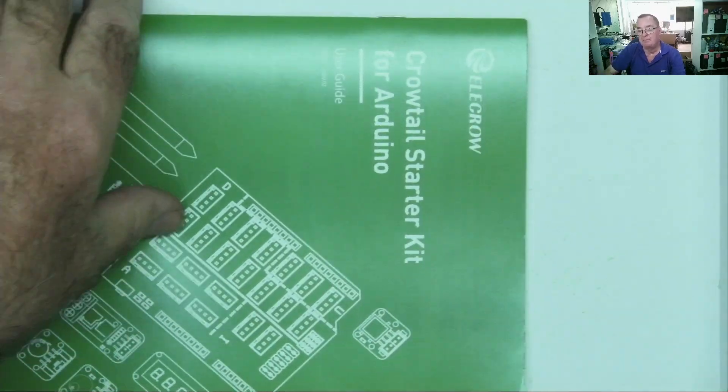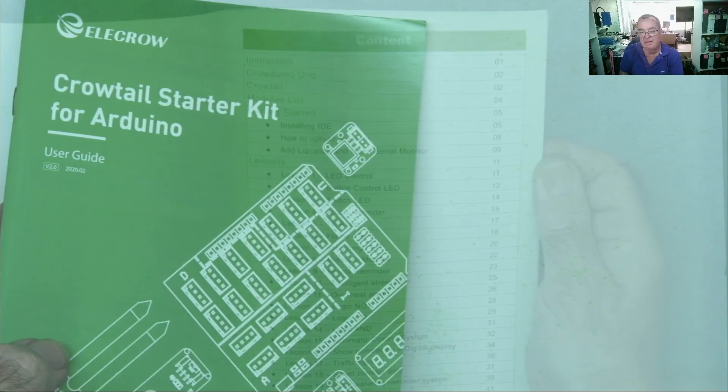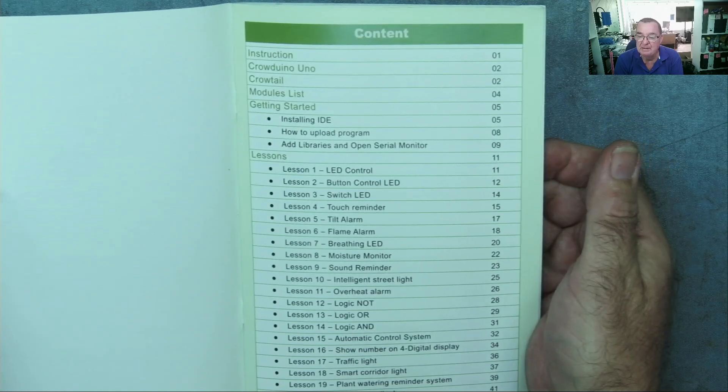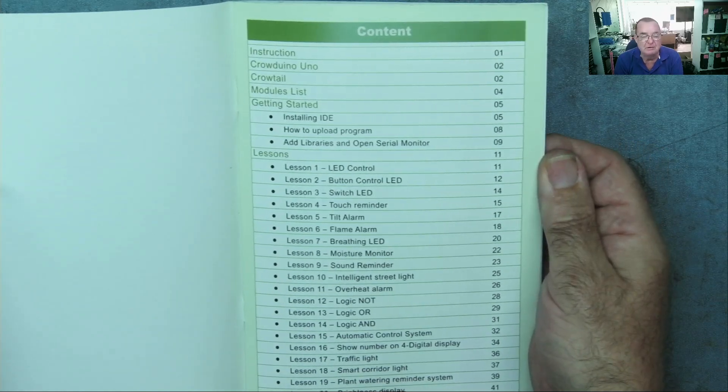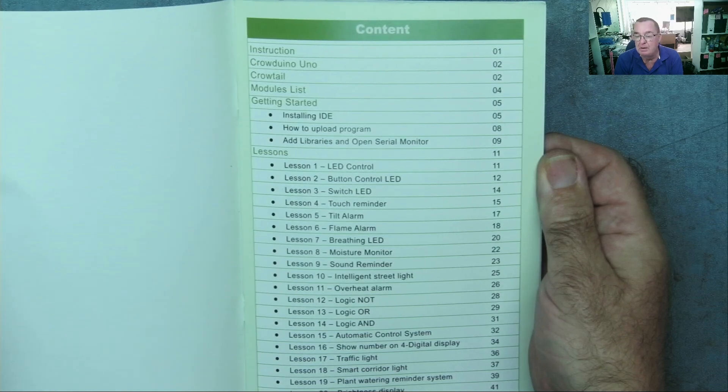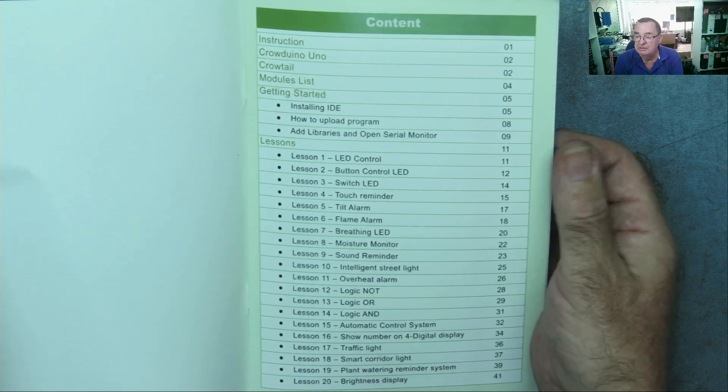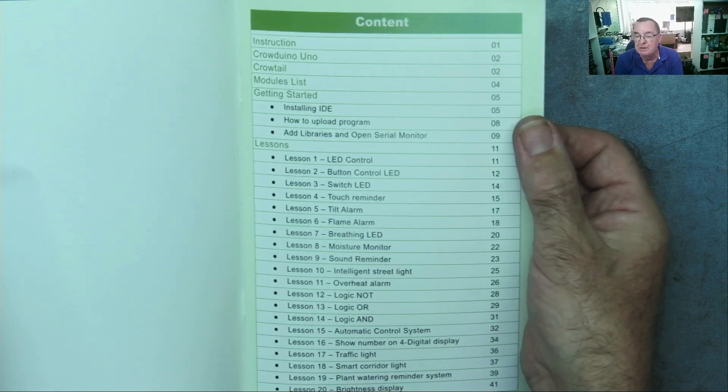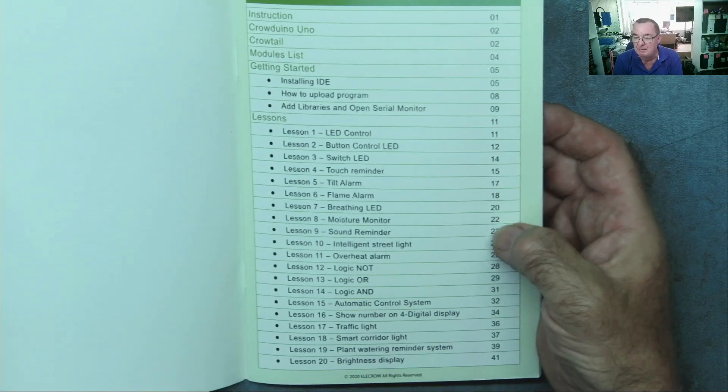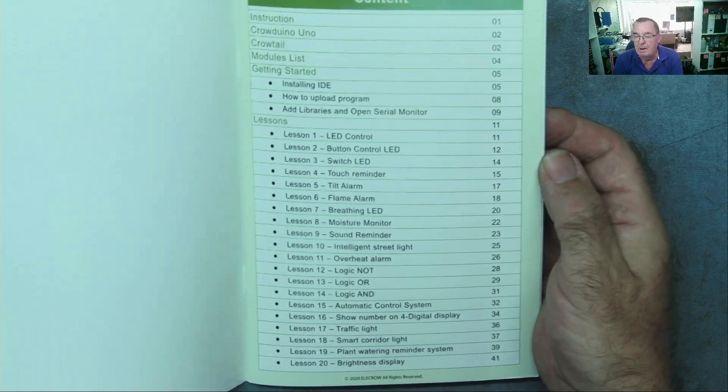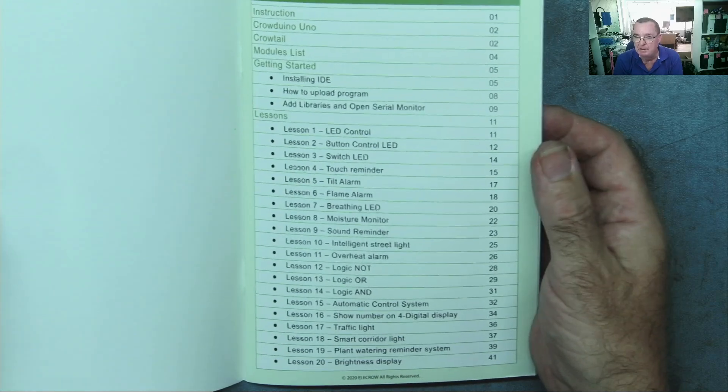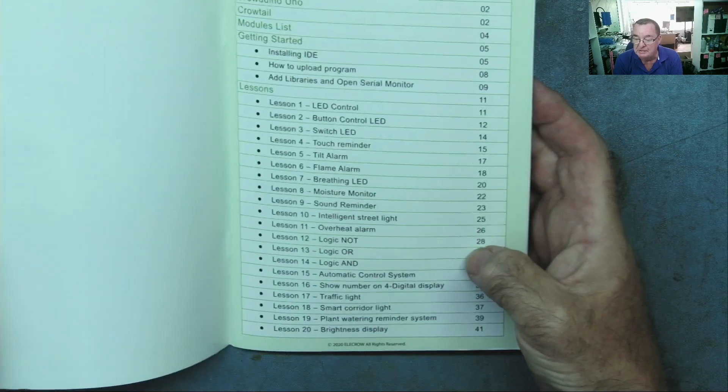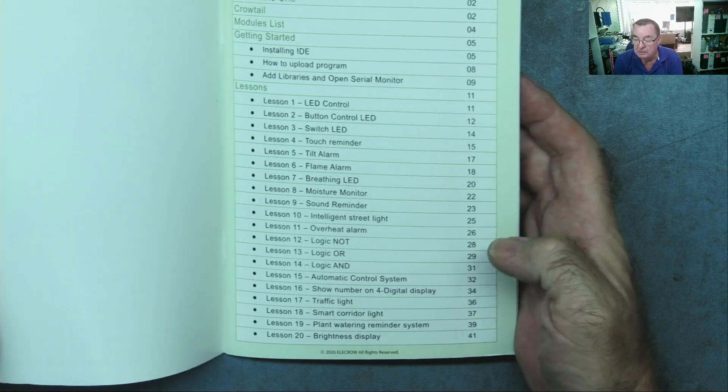Here it says we have a user guide. I'm guessing that's underneath here. Yes, so this is our user guide. Let's take a look at this. We have the Getting Started, installing the IDE. This is the program we use to write software to program our Arduino or microcontroller. It tells how to upload the program, adding libraries, serial monitors. So this is about the programming, and then this is the various projects we can build. Everything from LED control, this is probably a blinking LED.